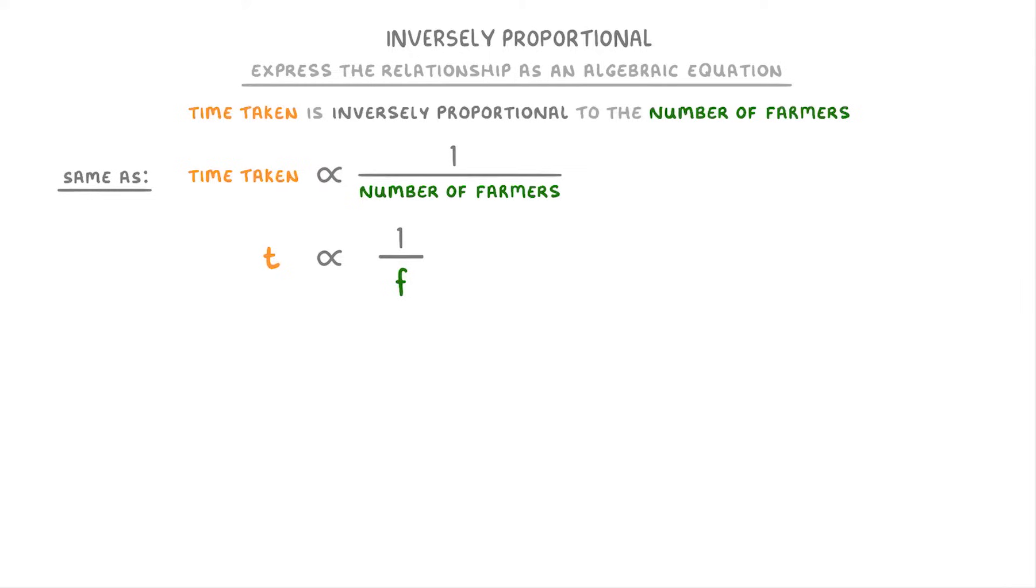To write this as a proper equation though, we need to change the proportional sign to an equal sign. And to do that, we have to include a constant of proportionality, which we normally show with the letter k. It's up to you where you put the k, but we normally put it in the top right of the equation, like we have here.